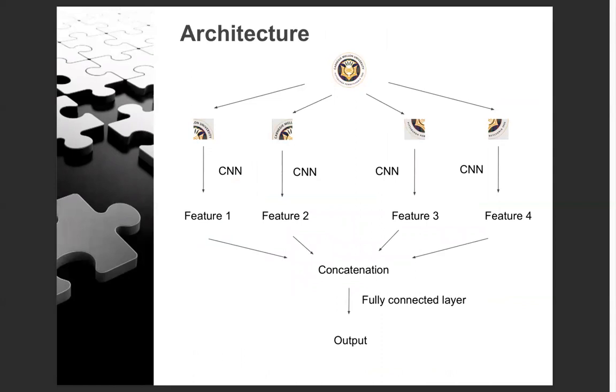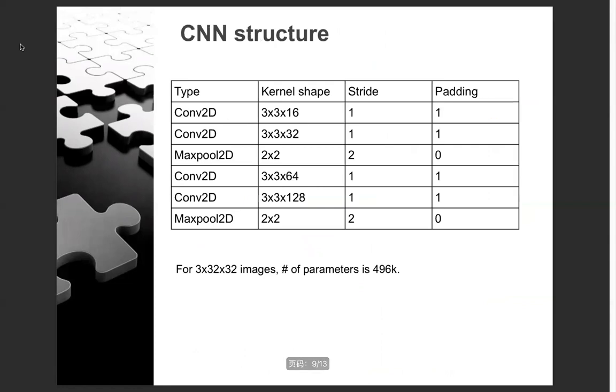This is the overall structure. We feed each piece into a CNN to get feature vectors. Then these feature vectors are concatenated to be passed into a linear layer to get the outputs. This is our CNN structure. We chose two conv layers followed by a max pooling layer, and we chose the number of layers and channels to be relatively small. The number of parameters of this network for CIFAR images is 500k.